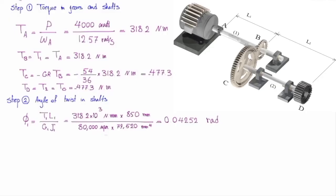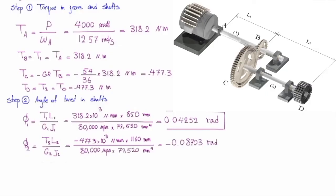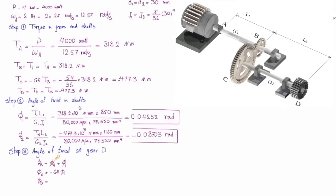Similar to that, we can determine how much is twist in the second shaft. Let's do the calculation here. Torque is 477.3 with a negative sign. Length is 1160. G is the same. And J is the same. So that gives us negative 0.08703 radian. Now we need to use the trick that we have learned. How much is the total twist at D? We have learned that twist at D is equal to phi 2 minus gear ratio times phi 1. We have these two values. Let's plug it into this equation. The negative sign cancels with the negative sign on the gear ratio. And that would be 0.1154 radian.